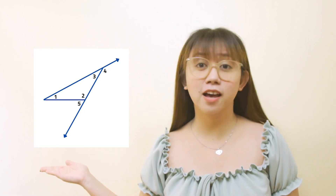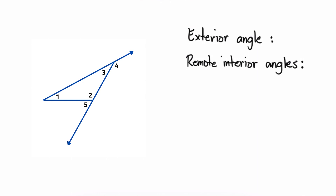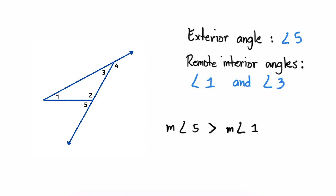Which of angle 5, angle 3, and angle 1 has the largest measure? Using the exterior angle inequality theorem, the measure of an exterior angle of a triangle is greater than the measure of either of its corresponding remote interior angles. Since angle 5 is an exterior angle of a triangle with angle 1 and angle 3 as remote interior angles, the measurement of angle 5 is greater than the measurement of both angle 1 and angle 3. So angle 5 has the largest measure of the three angles.